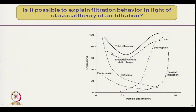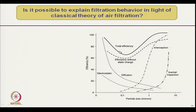As particle size increases, diffusion contribution reduces. But after a certain particle size, efficiency again increases due to inertial impaction and interception. This is the typical shape of the combined efficiency curve. Using electrostatic charge gives slightly higher filtration efficiency, but the typical shape of the curve remains the same.